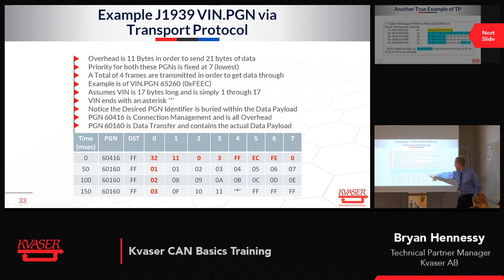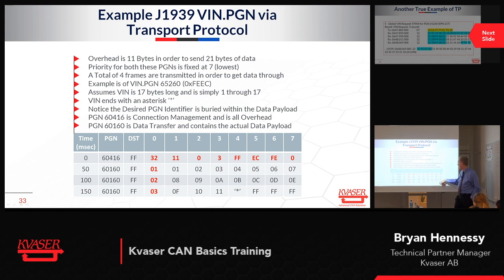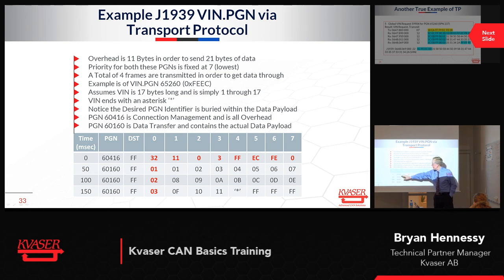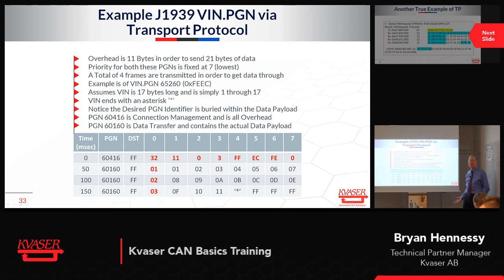In this diagram, the 11 bytes of overhead are highlighted in red. The data is just a counter, sent across 4 different CAN frames. In J1939 transport protocol, the priority for every one of these frames is 7 — the lowest priority. That's a disadvantage, because if you have a high-priority message over 8 bytes, you have no options; you just send it as priority 7.